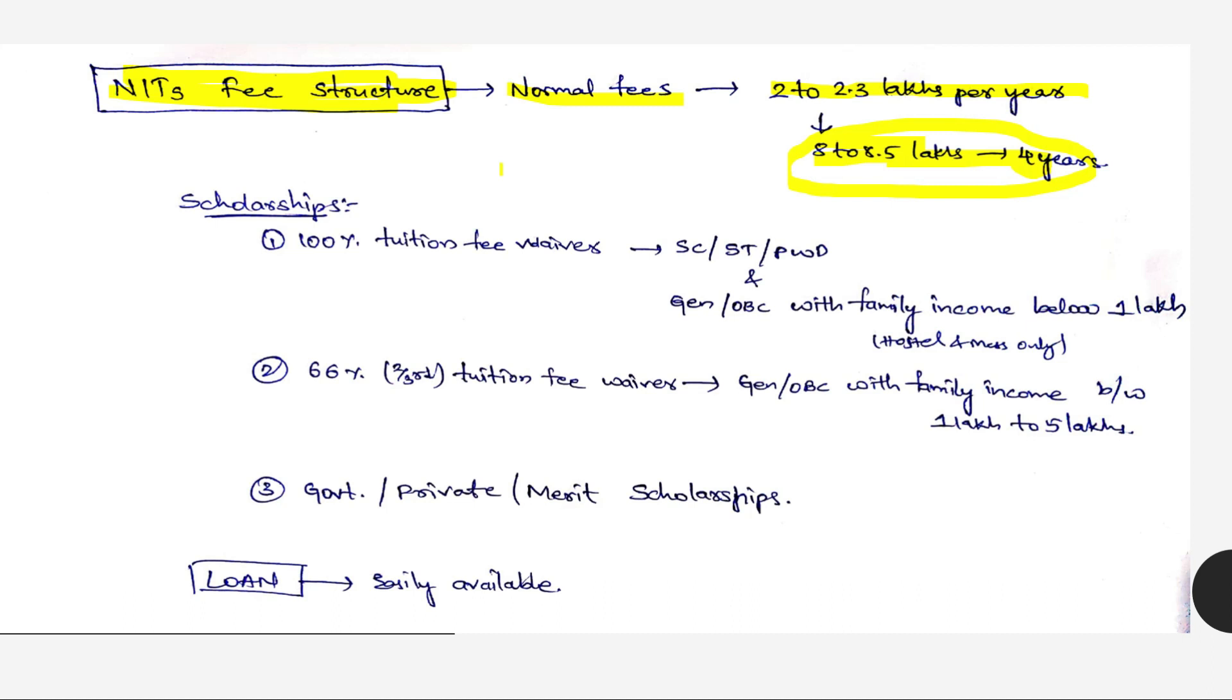100% tuition fee waiver for SC, ST, PWD, and general and OBC with family income below 1 lakh - same as IITs. If you have the income certificate below 1 lakh then you need not pay tuition fee. You'll be getting 100% tuition fee waiver, only you need to pay hostel and mess fees.